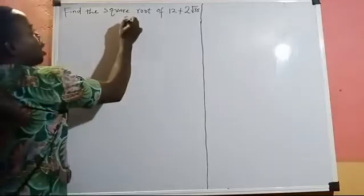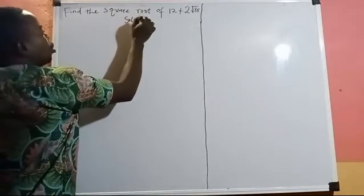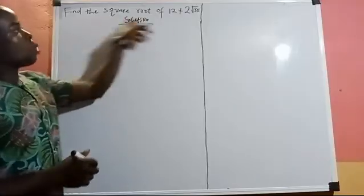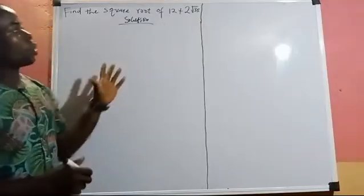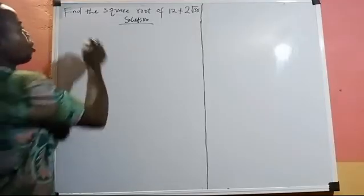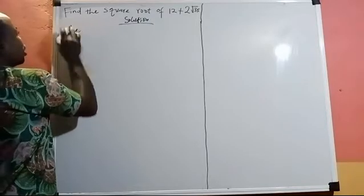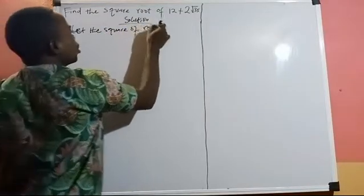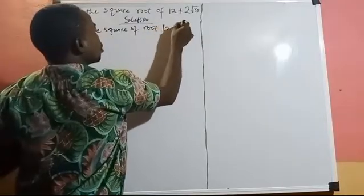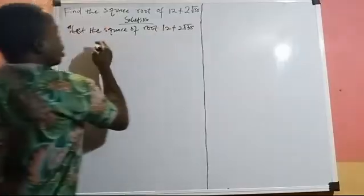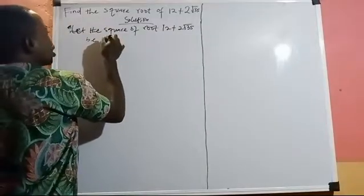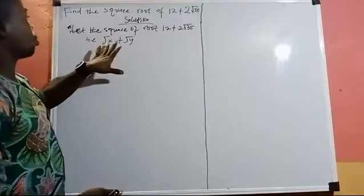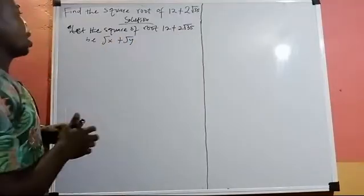First, we set up our solution. What we're going to do is set the square root of this expression equal to something. We let the square root of 12 plus 2√35 equal √x plus √y, and we want to find the unknowns x and y.